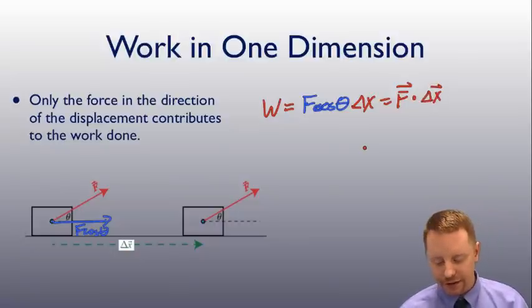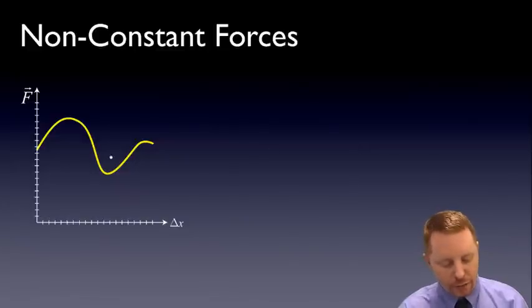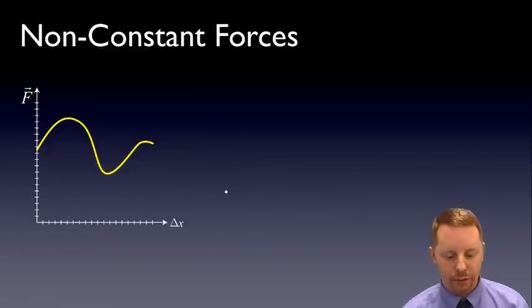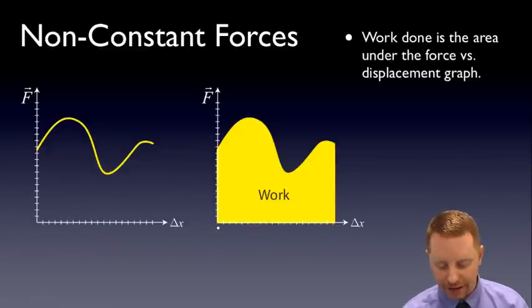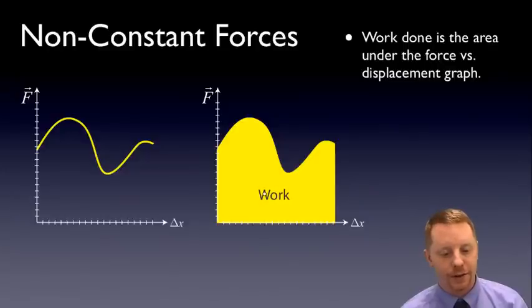What if it's a non-constant force though? Here we have a varying force as a function of x. Well in this case, the way you would find the work done would be to take the area under the graph. Area under the graph gives us the work in a force versus displacement graph.